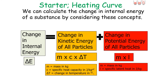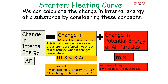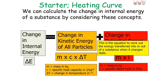The change in the kinetic energy store of a substance is given by E = mcΔT, where mass is in kilograms, specific heat capacity is in joules per kilogram degree Celsius, and the change in temperature is in degrees Celsius. The change in the potential energy store is given by E = mL, where mass is in kilograms and specific latent heat is in joules per kilogram. The first equation is used when a substance changes temperature; the second when it changes state.